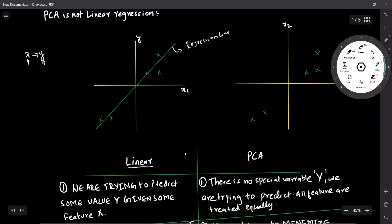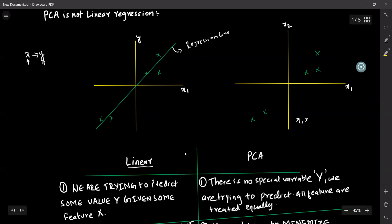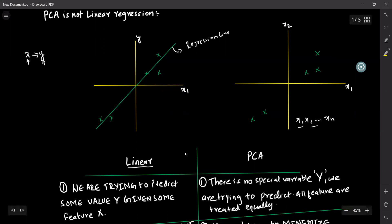Whereas in PCA, there is no special y. PCA is an unsupervised machine learning module. We have features like x1, x2, up to xn. We don't have any special variable y, and we are trying to find the pattern in our data looking at the x variables. So here all features are treated equally.